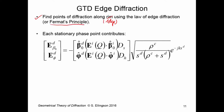Each stationary phase point then contributes a GTD diffraction contribution in this form. I've written this as a vector with two components. E superscript D refers to the diffracted field. The subscripts are beta-naught and phi, which are orthogonal field components. Beta-naught and phi form a coordinate system with the direction of propagation — this is an example of a ray-fixed coordinate system.